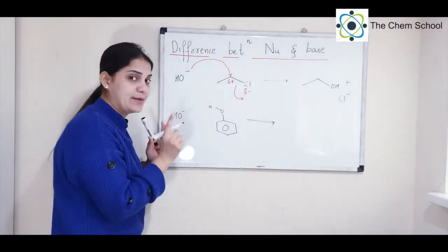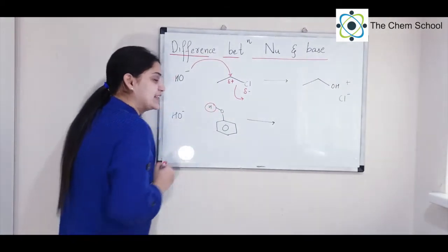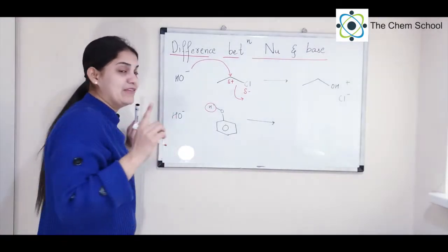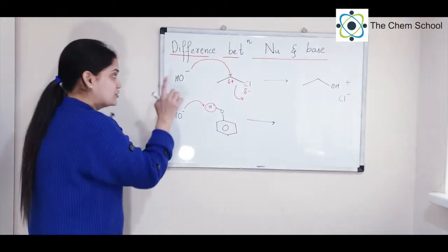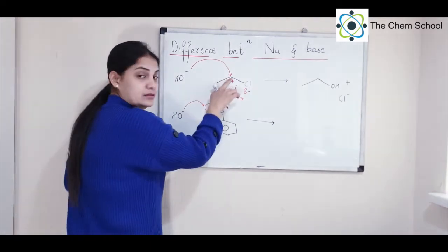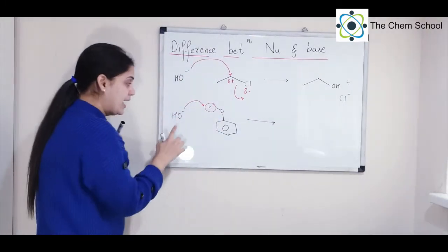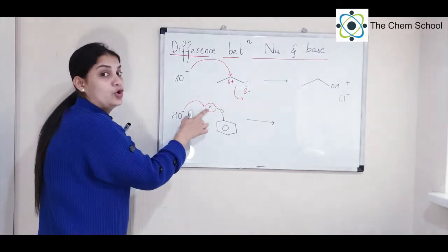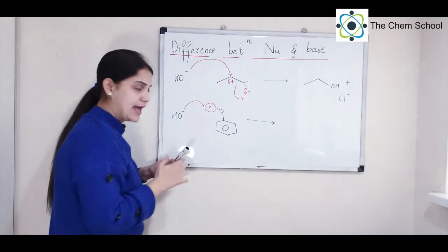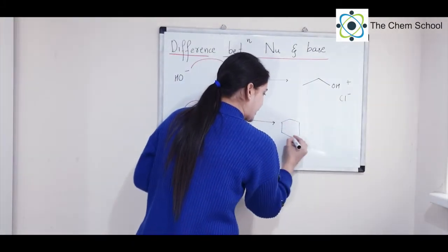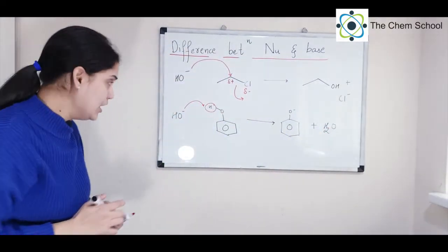The second example also involves hydroxide ion, but this time reacting with phenol, where the H is acidic. Here, OH behaves as a base — it donates its electron to hydrogen. OH is attacking the proton, resulting in water formation and a phenoxide ion. So you get phenoxide ion plus H2O — this is an acid-base reaction.